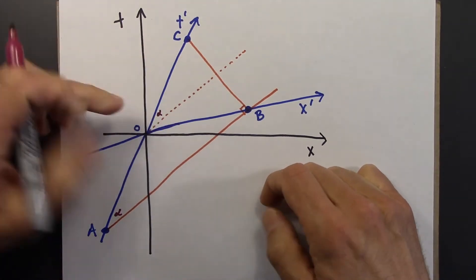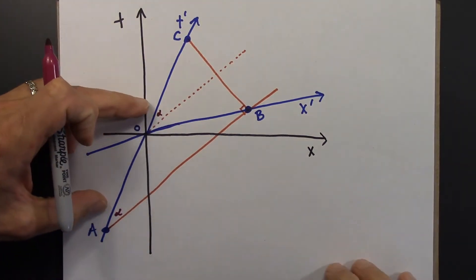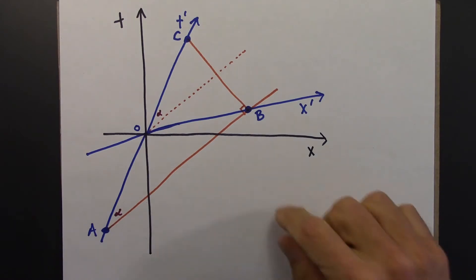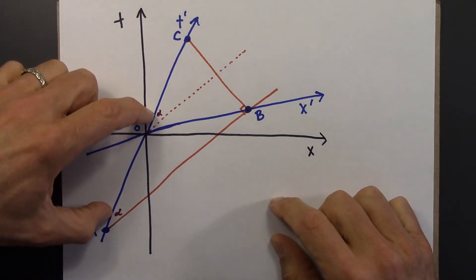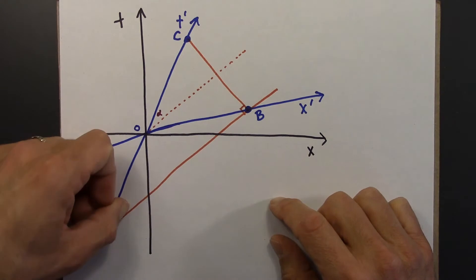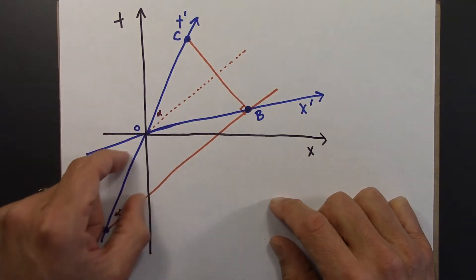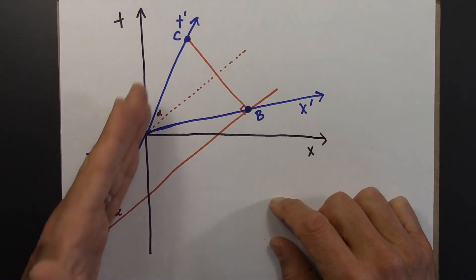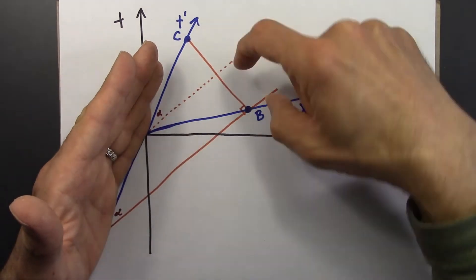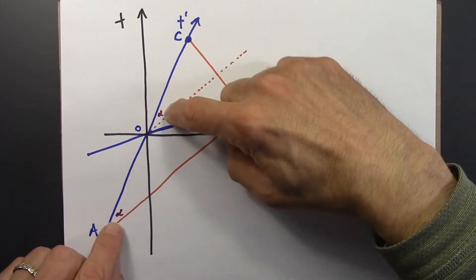Because these angles, that's an alpha, not a very good alpha. That's an alpha. These angles here and here are equal. Why? Because these lines are parallel. So when this straight line intersects here and intersects here, because these lines are parallel, it's going to make the same angle.